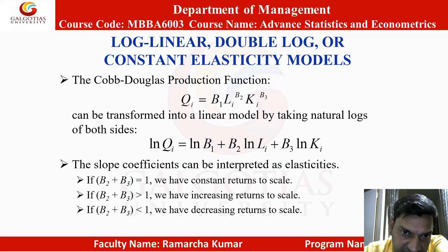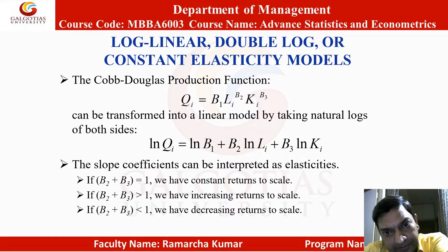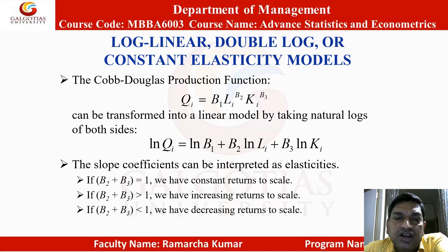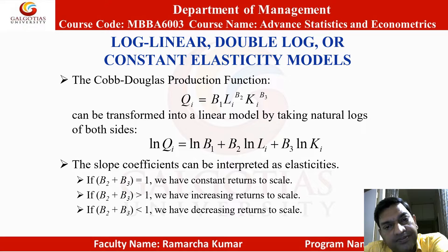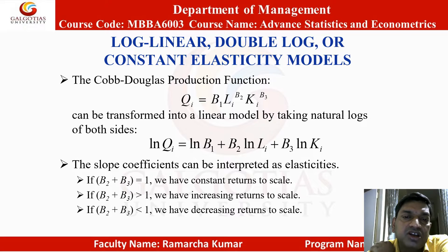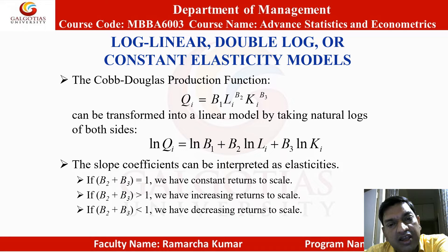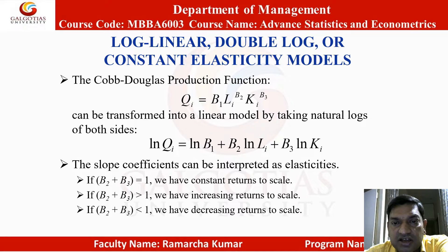Suppose we have a production function of the form: Q_i, which is output, is a function of L and K, labor and capital. So, Q_i = B1 times L_i raised to the power B2 times K_i raised to the power B3. B1, B2, B3 are unknown parameters, and this can be transformed into a linear model by taking natural logs. So, ln(Q_i) = ln(B1) + B2 times ln(L_i) plus B3 times ln(K_i), that is capital.